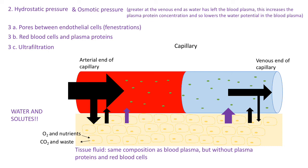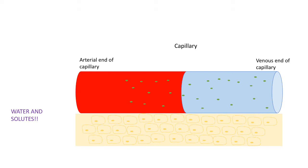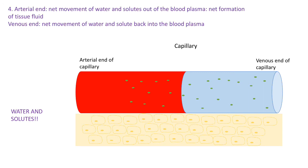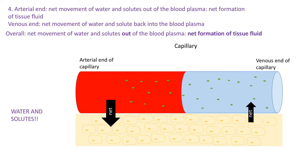The answer to question four: at the arterial end there's a greater movement of water and solutes out of the blood plasma, so there's a net formation of tissue fluid. At the venous end there's a net movement of water and solutes back into the blood plasma. Overall, across the capillary, there is a net formation of tissue fluid.